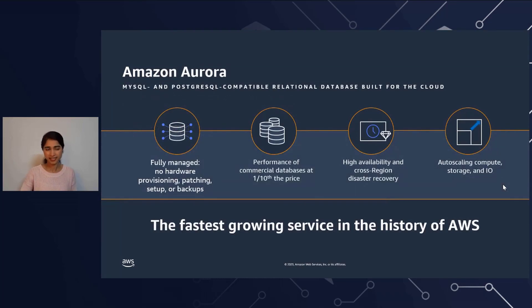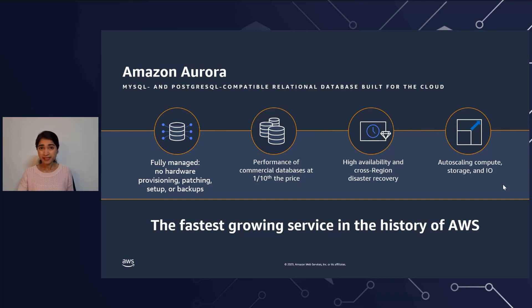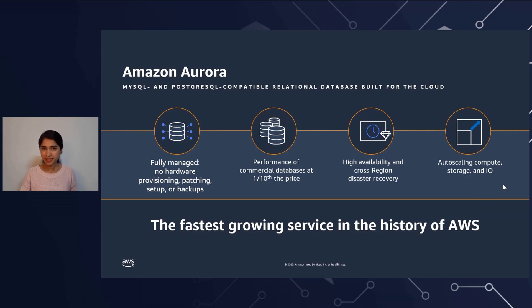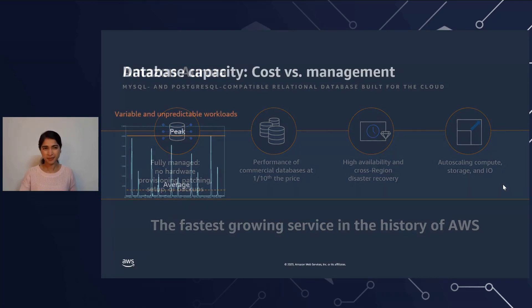First off, to set context, what is Amazon Aurora? It is a MySQL and Postgres compatible relational database that's built for the Cloud. It's a fully managed database. It gives you the performance and availability that you would expect from a commercial database, but at just one-tenth the price. It is also the fastest growing service in the history of AWS.